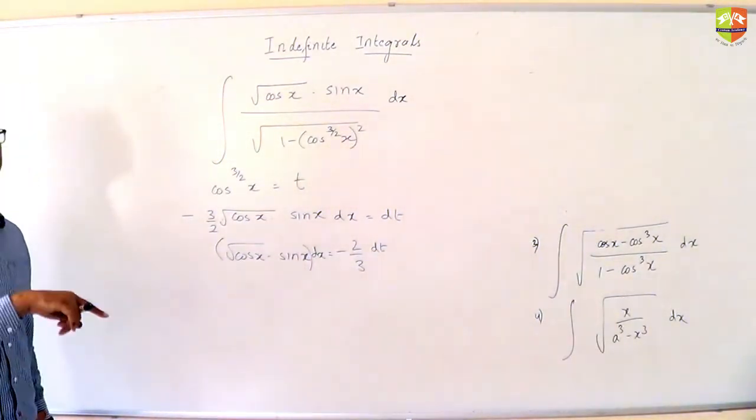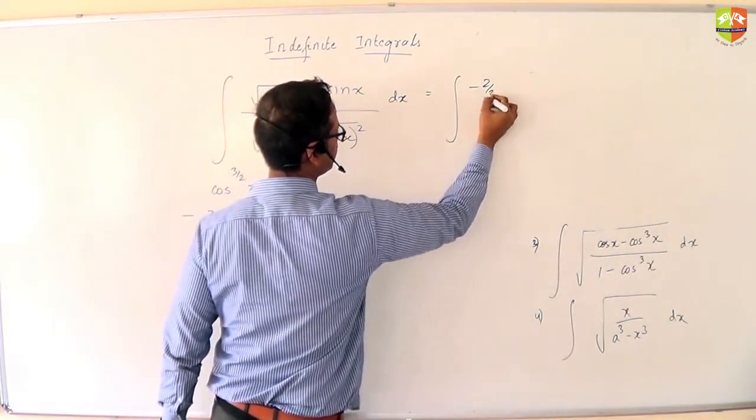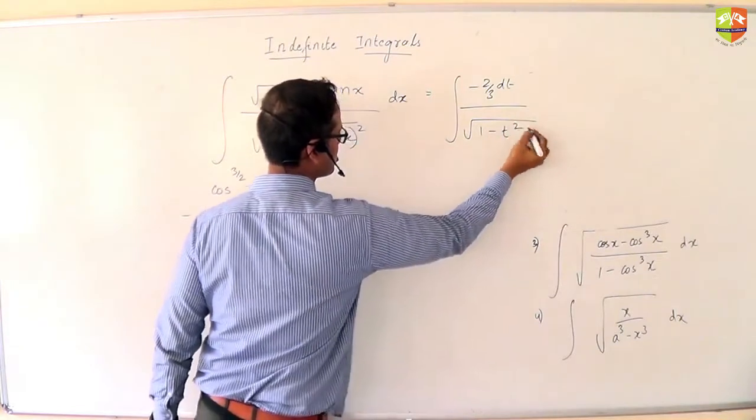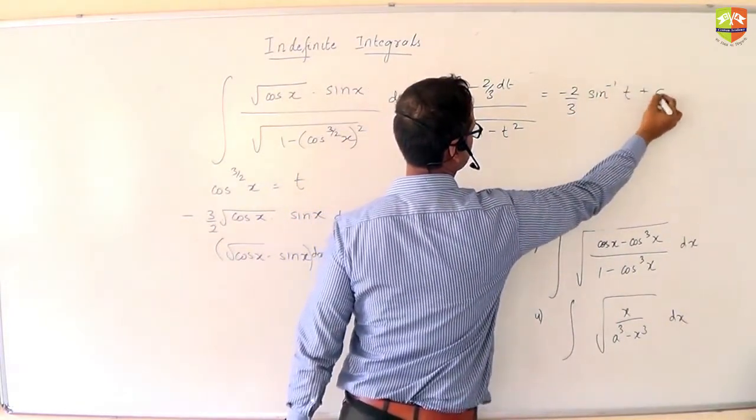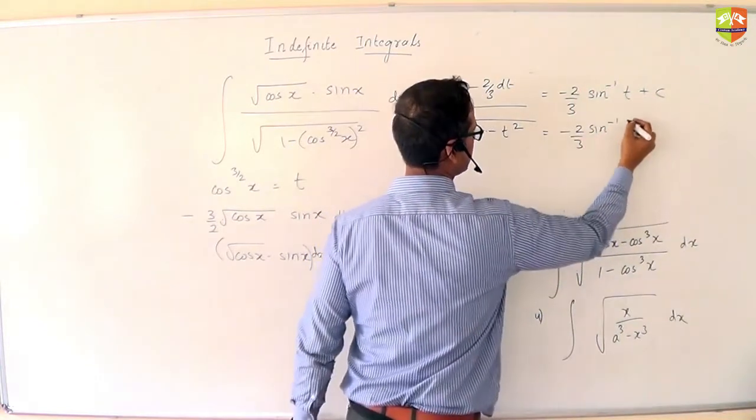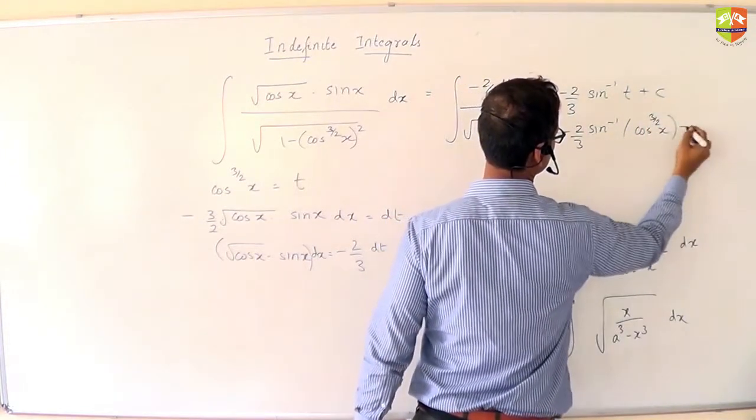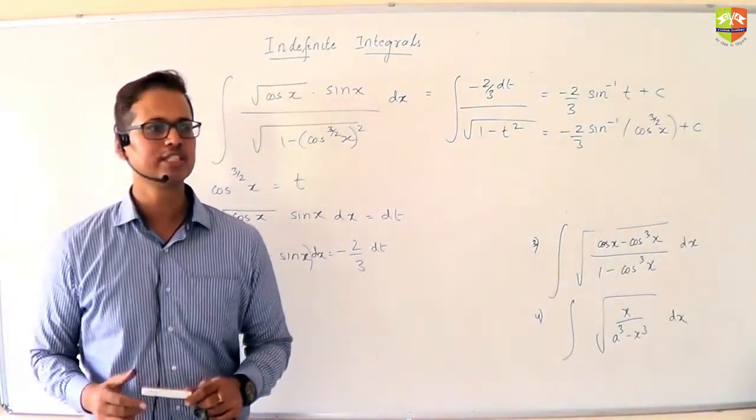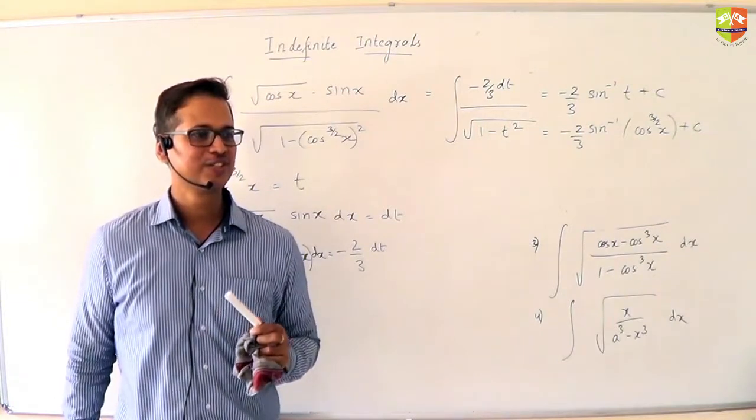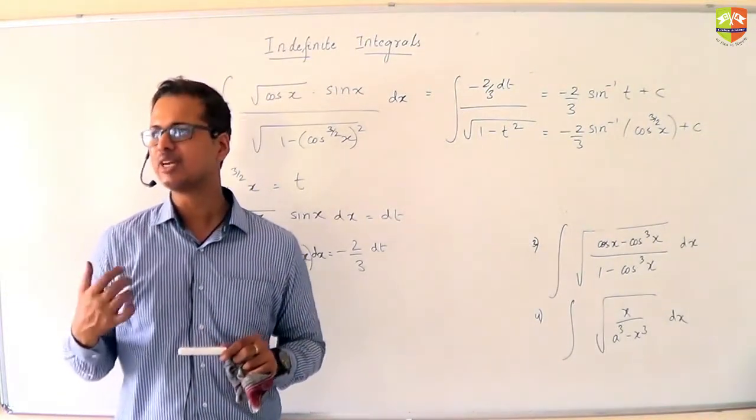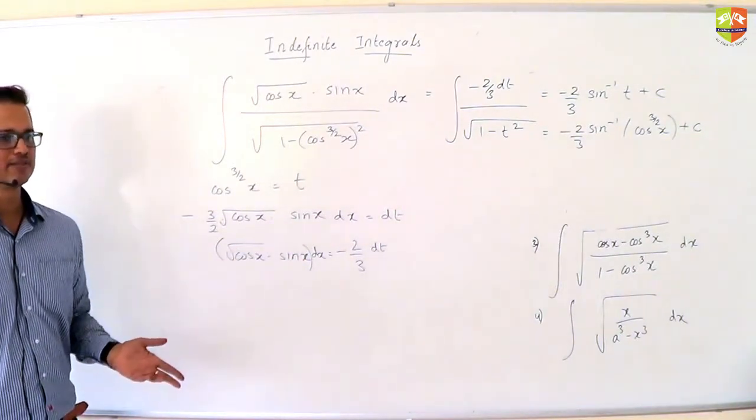If you take cos x as t you will have to make one more substitution. That's why I have made single substitution for both of them. So your numerator will become minus 2 by 3 dt, your denominator will become 1 minus t squared. So your answer will be minus 2 by 3 sine inverse t. Many times what happens when you solve such problems in objective exam looking at the options you will get to know, I think so this is the substitution required. So your answer will tell you what is the required substitution, it will give you at least a hint how to proceed.